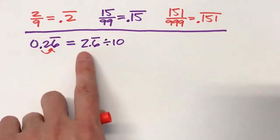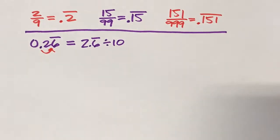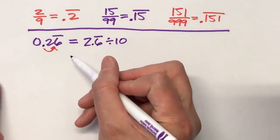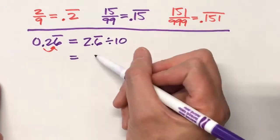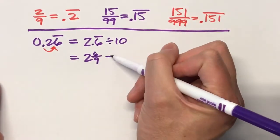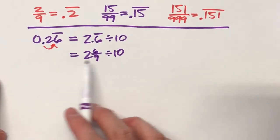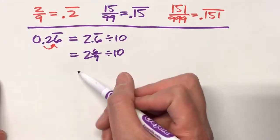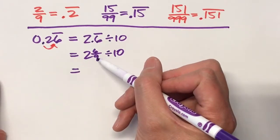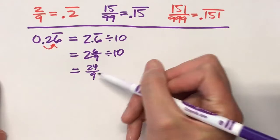And by making this repeating decimal into this side, we can actually convert this all into one big fraction. For example, 2.6 repeating is 2 and 6 ninths. And I'm going to drop down to divide by 10. Now, before I can divide, I need to make this an improper fraction. So 2 and 6 ninths, 2 times 9 is 18, plus 6 is 24. So this whole thing is 24 ninths.